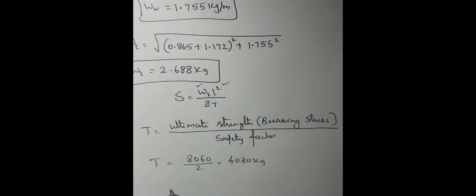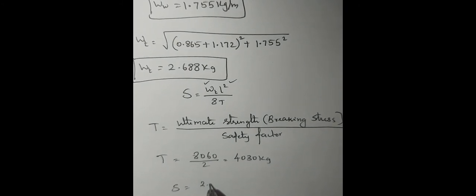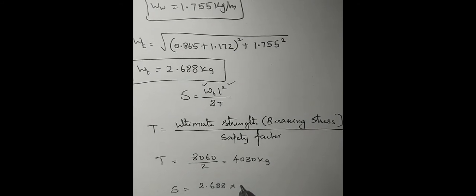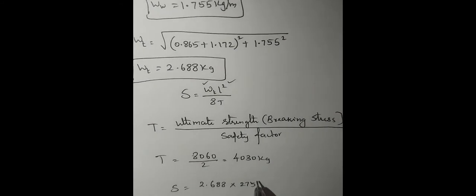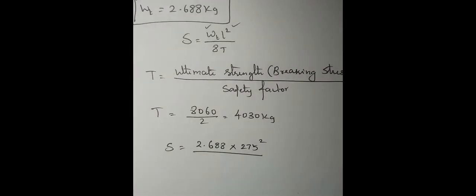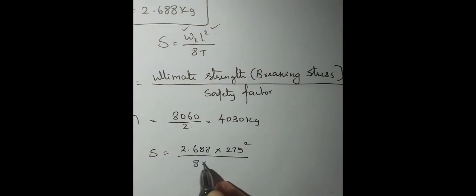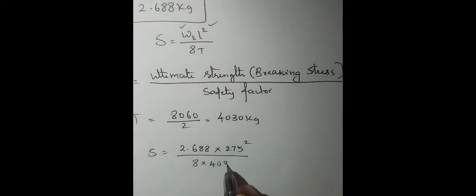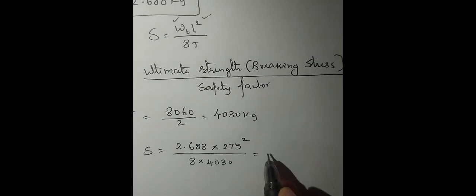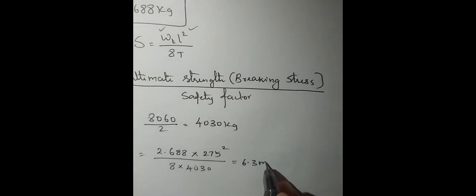Now substituting in the SAG formula: S = (Wt × L²) / (8T) = (2.688 × 275²) / (8 × 4030). Calculating this, we get SAG = 6.3 meters.